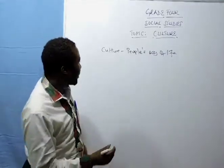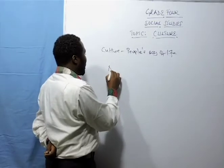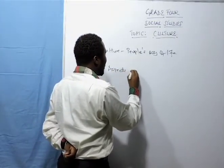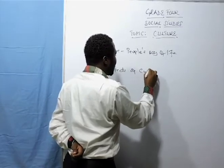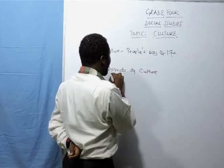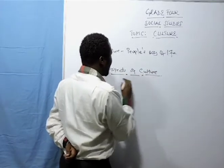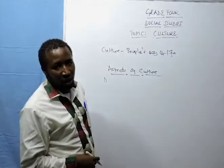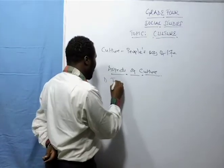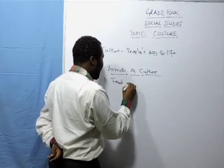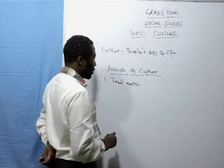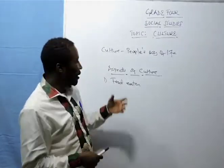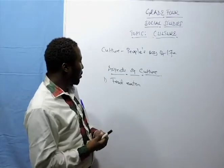These are the various aspects that we have as we talk about culture. Let us look at aspects of culture. When we are looking at culture, number one aspect we look at is the food that we eat. Some certain cultures have certain beliefs on various kinds of foods that we eat.